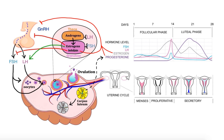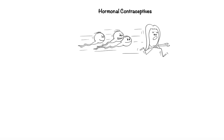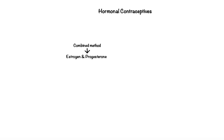Now that we covered the menstrual cycle, let's move on to the second part of this lecture: the pharmacology of hormonal contraceptives. Hormonal contraception refers to birth control methods that act on the endocrine system of the female to prevent ovulation or fertilization. There are two main types: the combined method, which contains synthetic forms of both estrogen and progesterone, and the progestin-only method, which contains only progestin — that is the synthetic version of progesterone.